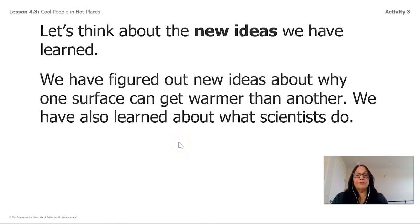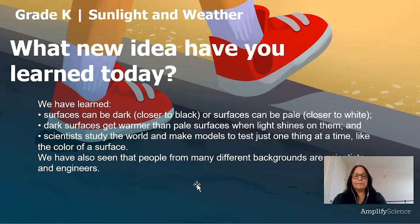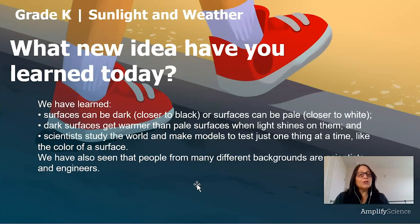Let's think about the new ideas we have learned. We've come to the end of our lesson. We learned that surfaces can be dark—closer to black—or pale—closer to white. Dark surfaces get warmer than pale surfaces when light shines on them. Scientists study the world and make models to test just one thing at a time, like the color of a surface. We have also seen that people from different backgrounds are scientists and engineers.